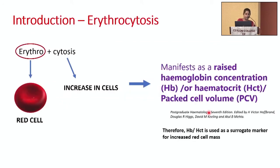Moving into the introduction of erythrocytosis: the word itself is self-explanatory — erythro means red cell, cytosis means an increase in cells. It manifests as a raised hemoglobin concentration or hematocrit. Ideally, to prove there is an increased red cell mass we should do a red cell mass estimation, but that is very cumbersome and costly, so we don't do it in day-to-day practice. We use the surrogate markers hemoglobin or hematocrit.